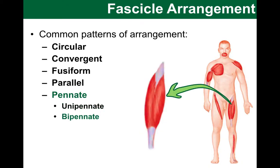Then, in a bipennate muscle, the muscle fibers insert from opposite sides of the tendon. A nice example of this is the rectus femoris muscle of the thigh.